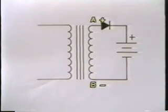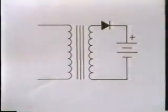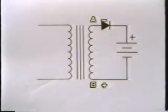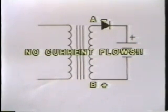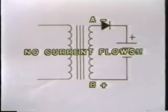Now the negative side of the transformer secondary. But let's see what happens when the transformer reverses polarity and point A becomes negative and point B becomes positive. The current wants to flow from point B of the transformer secondary winding through the battery and back to point A, but the diode is now pointing against the current flow and will not allow the current to pass through itself. This breaks the return path for the current and stops the current from flowing anywhere in the circuit. Remember, we must have a complete path for current to flow in the circuit.